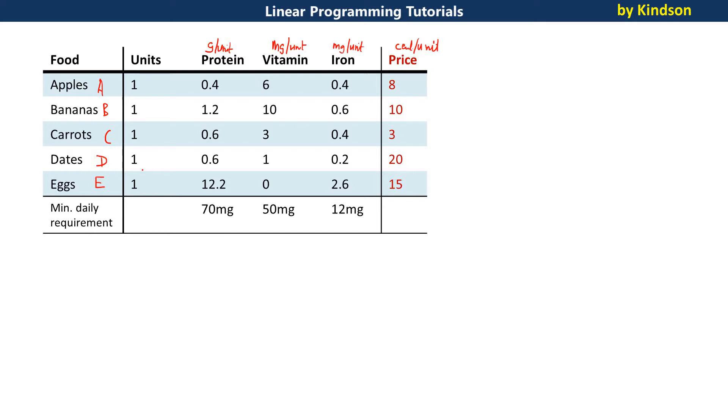Now we are going to follow the steps. The first thing, we are going to identify the variables. The variables that we need to consider here are actually the food. Variables are the A, B, C, D, E, and these are the quantity of food that has to be eaten. For now, we don't know it. That is why they are variables.